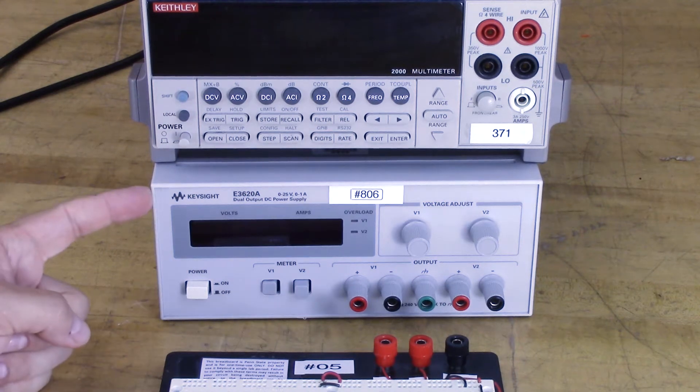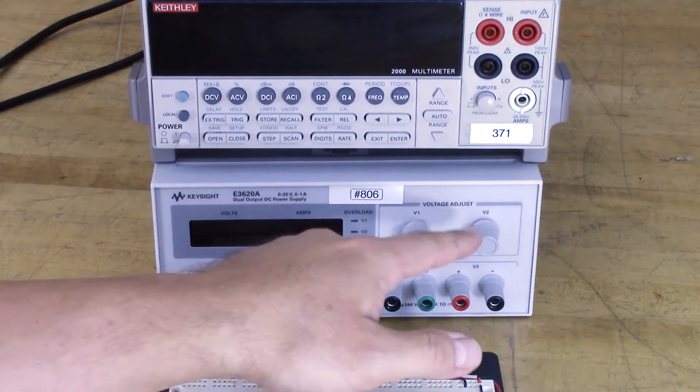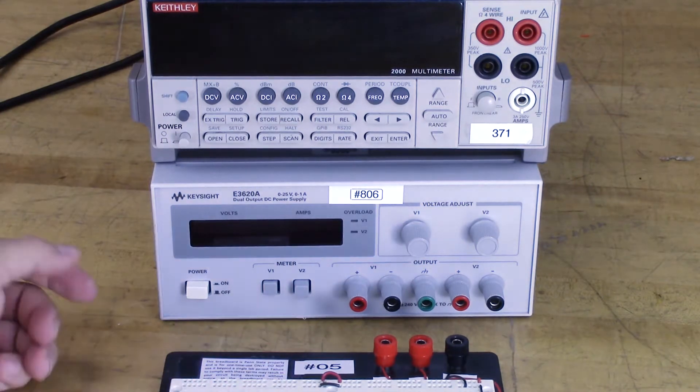All right, here's a video on how to use the Keysight E3620A power supply. This is a basic dual power supply. You have different voltage controls and selectors, and then outputs as well as ground.